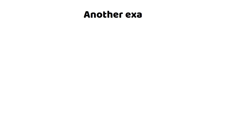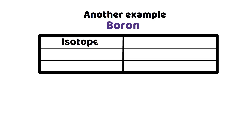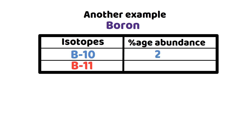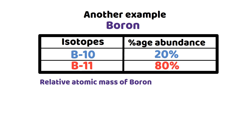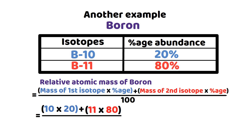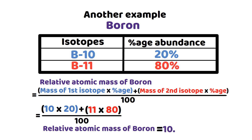For boron, it has two isotopes — boron-10 and boron-11. 20% of boron exists as boron-10, while 80% exists as boron-11. Please pause the video and for self-assessment, try to find the relative atomic mass of boron. If your answer is 10.8, then it is correct.